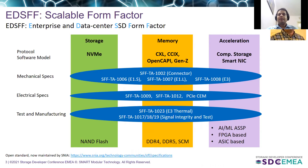EDSFF can also be used for hardware acceleration implementations like computational storage or SmartNICs. The EDSFF specification enables any type of media to be used as a backend, allowing the same physical device form factor to be used as SSDs with NAND flash, DDR4 or DDR5 DRAMs, or as a persistent memory device with storage class memories. The specification is also independent of any controller implementation — the end user can choose an ASIC, FPGA, or any application-specific IC.